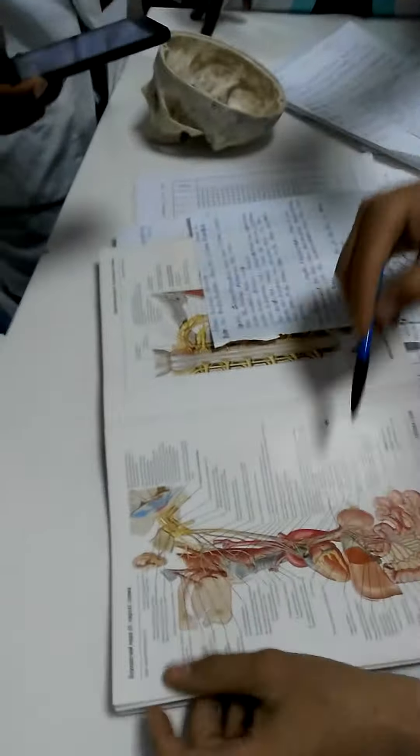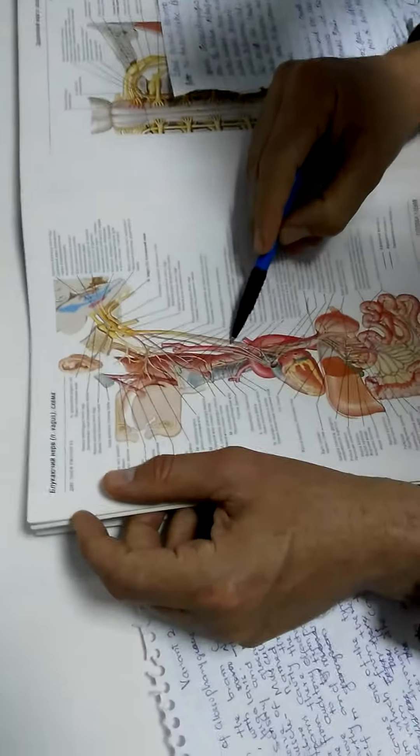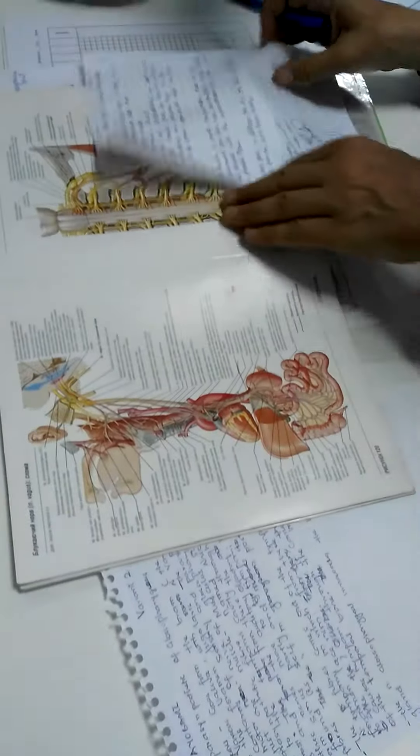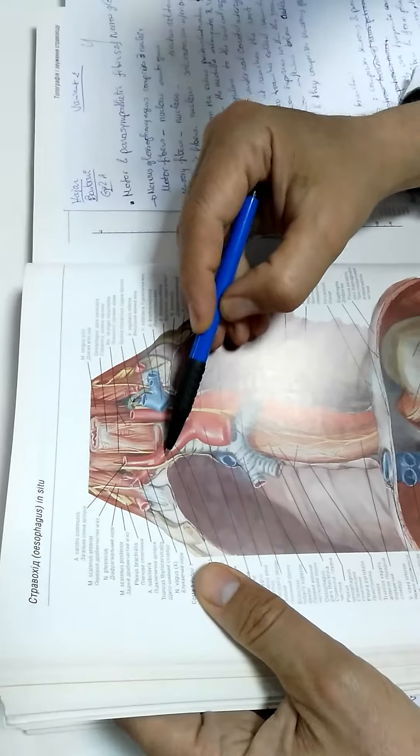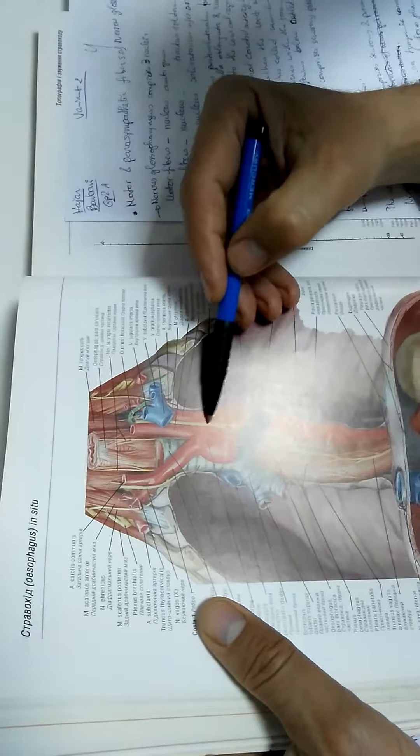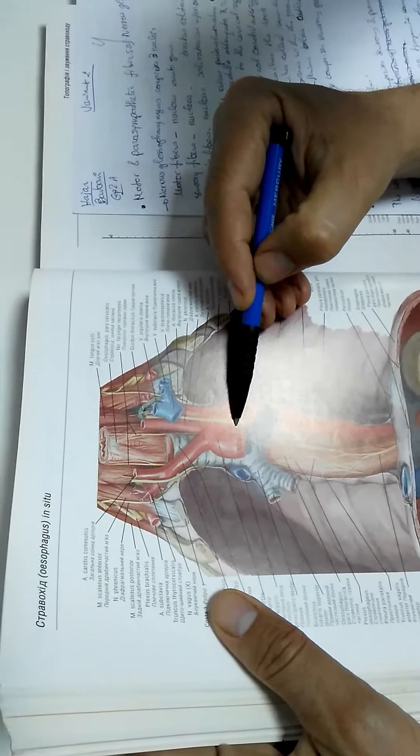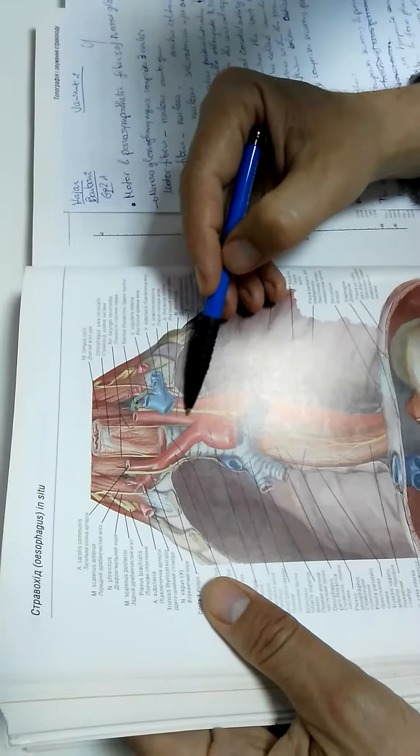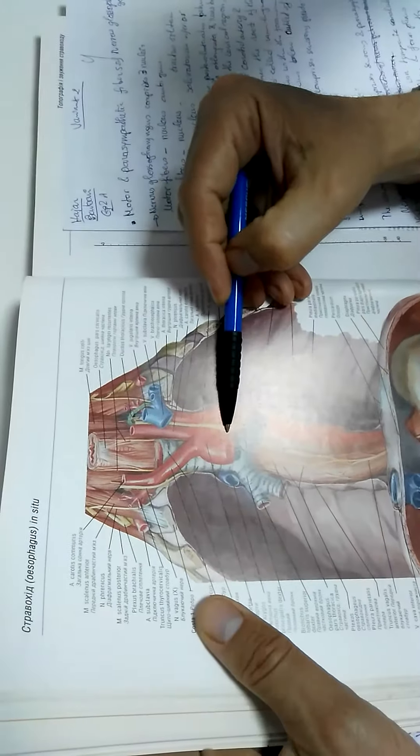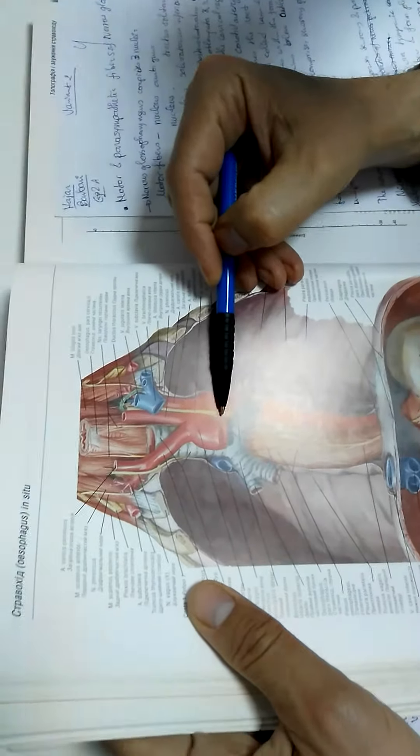So mental nervous nerve is nervus laryngeus recurrens, nerve which comes back to the larynx. But what difference between right and left nervus laryngeus recurrens? The right one surrounds the subclavian artery at the right side and comes back. The left one surrounds the aorta. That's why the cervical part of the left vagus nerve is longer than the right one because the lower border of the cervical part is the place of nervus laryngeus recurrens origin.